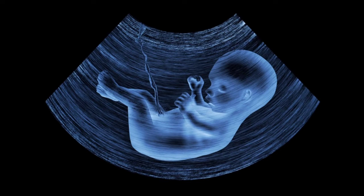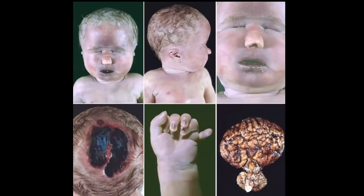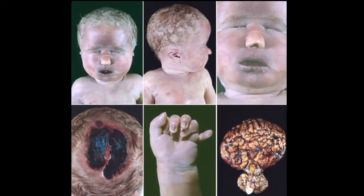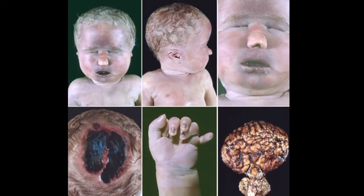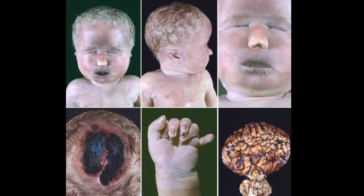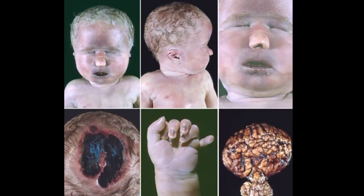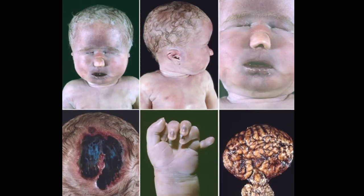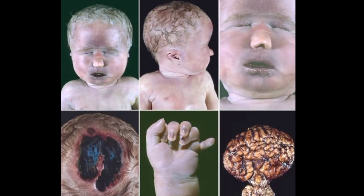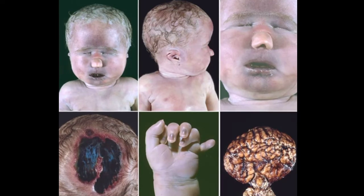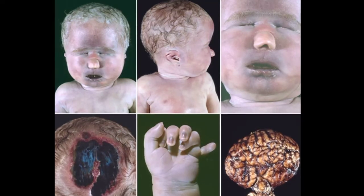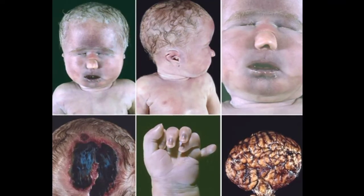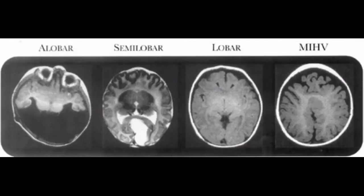Some children will have an identifiable genetic cause of holoprosencephaly. Approximately one-third of children born with holoprosencephaly have an abnormality of the chromosomes, which contain the genetic material. The most common chromosomal abnormality associated with holoprosencephaly is trisomy 13 — three copies of chromosome 13 — although a number of other chromosomal changes can also cause the condition. Despite this, the exact cause is not identified for many individuals, and there are likely additional genetic causes yet to be discovered.